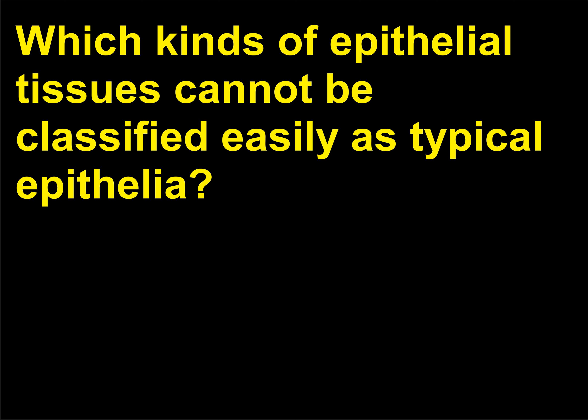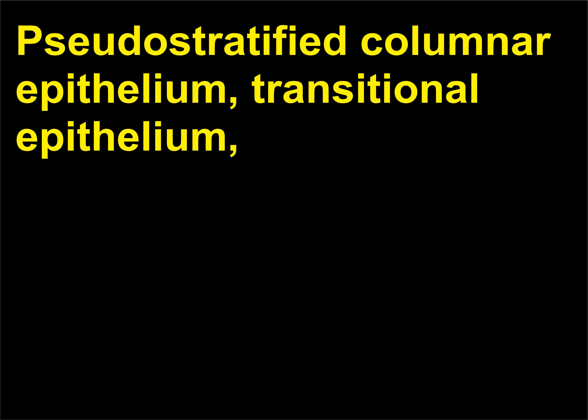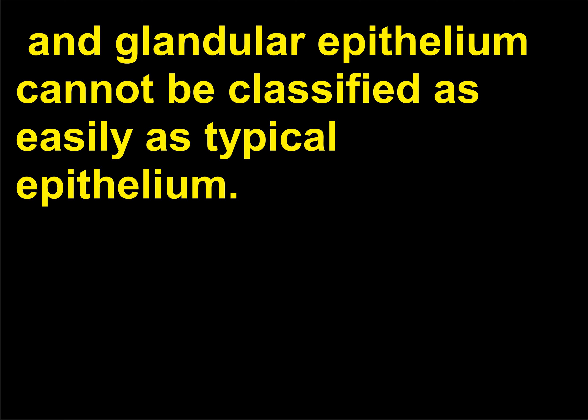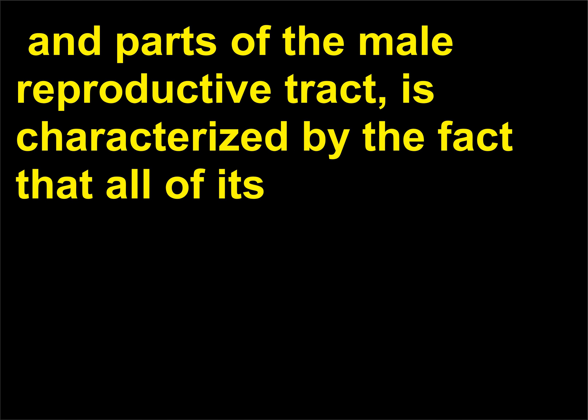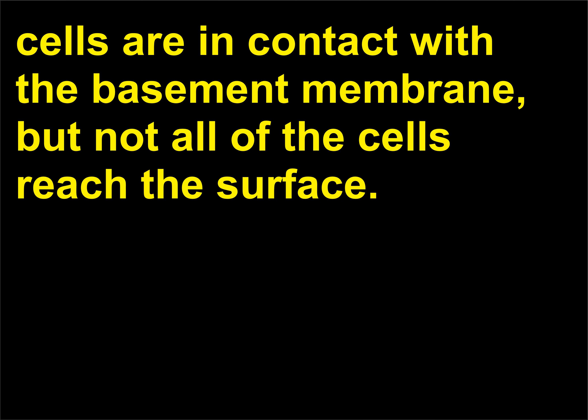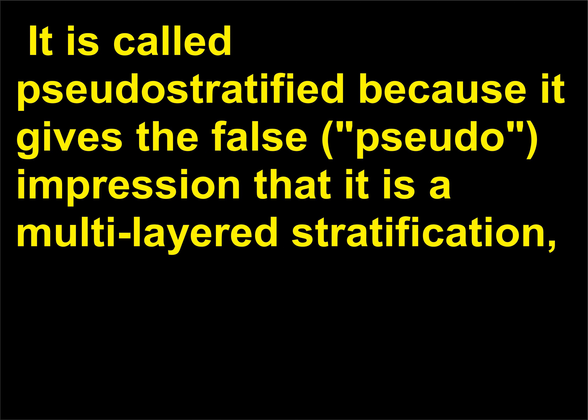Which kinds of epithelial tissues cannot be classified easily as typical epithelia? Pseudo-stratified columnar epithelium, transitional epithelium, and glandular epithelium cannot be classified as easily as typical epithelium. Pseudo-stratified columnar epithelium, found in the trachea, bronchi and large bronchioles, and parts of the male reproductive tract, is characterized by the fact that all of its cells are in contact with the basement membrane, but not all of the cells reach the surface. It is called pseudo-stratified because it gives the false impression that it is a multi-layered stratification.